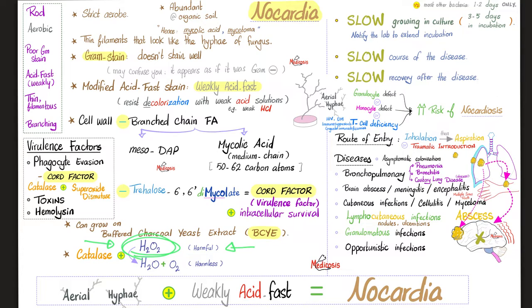Do not expect other people in the hospital to read your mind — stand up for yourself and your patients. When the patient asks what happened to the sample after six days with no results, the answer is: even if you were a multi-gazillionaire, I cannot force Nocardia to grow faster. Nocardia is notoriously slow. This is not Amazon Prime service — this is a weakly acid-fast organism.